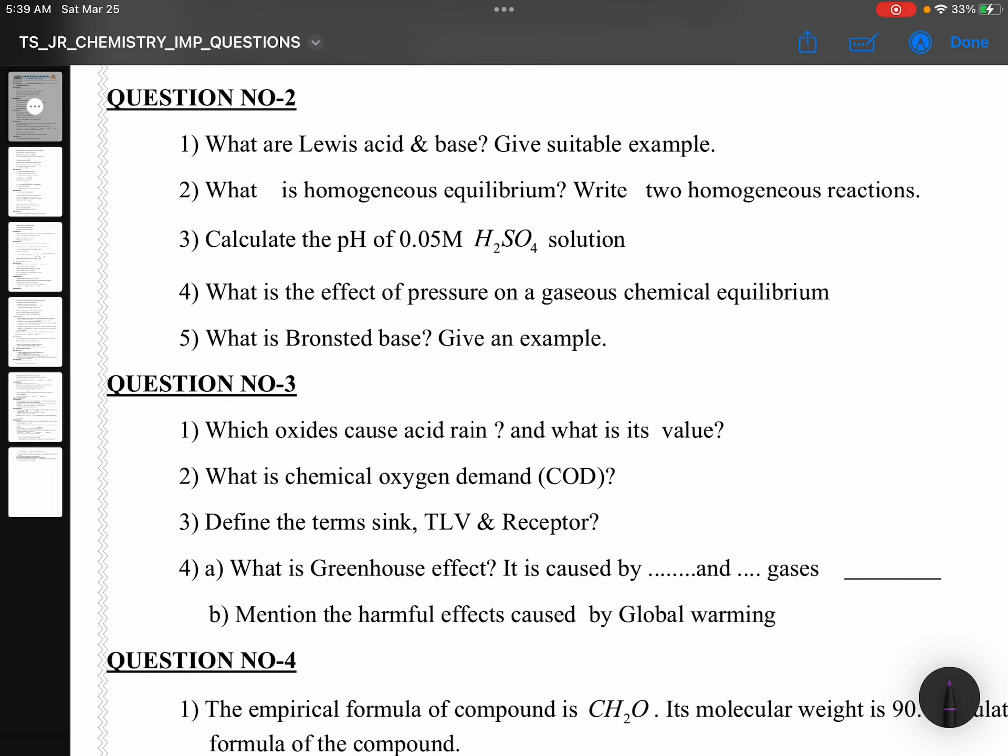Question number 2 will be from Ionic Equilibrium. What are Lewis acid and base? Give suitable example. What is homogeneous equilibrium? Give 2 homogeneous reactions, chemical equilibrium. Calculate the pH of 0.05M H2SO4 solution. What is the effect of pressure on a gaseous chemical equilibrium? What is Bronsted base? Give an example.